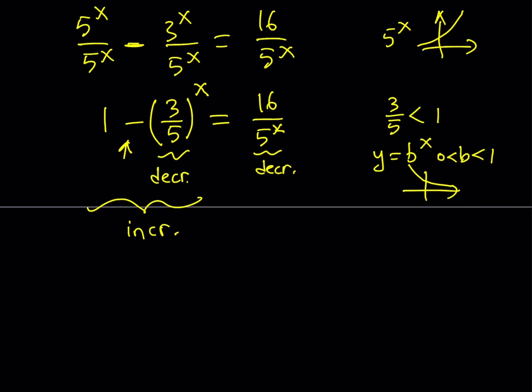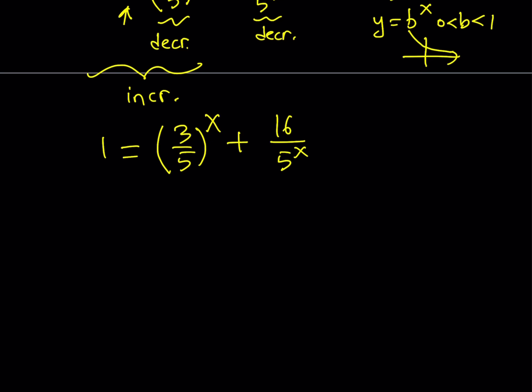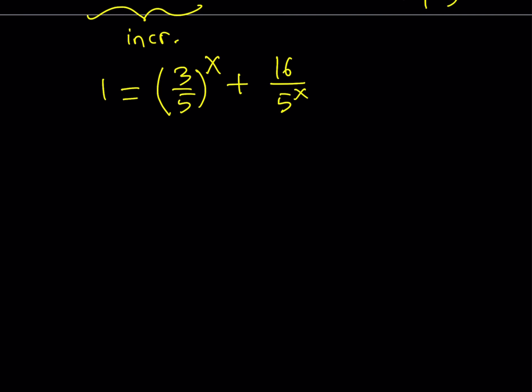I want to show you an alternative approach. If you add 3 over 5 to the power x to both sides, you're going to get 1 equals 3 over 5 to the power x plus 16 over 5 to the power x. Now look at it from this perspective. On the right-hand side, we have two decreasing functions. If you add two decreasing functions, then you get a decreasing function.